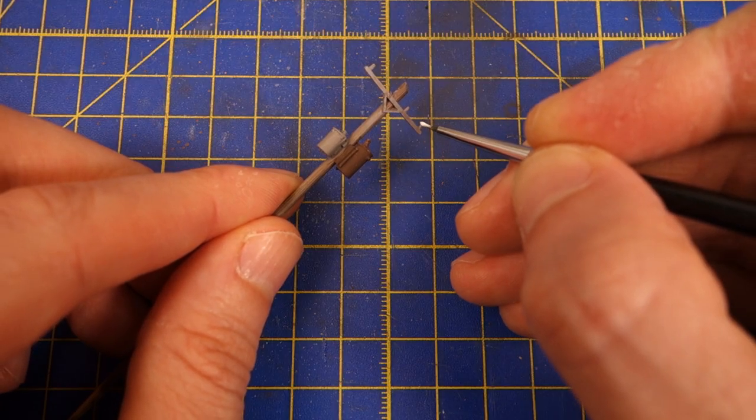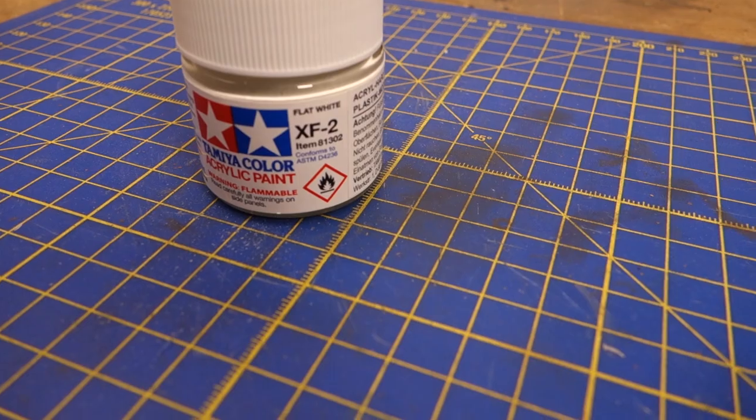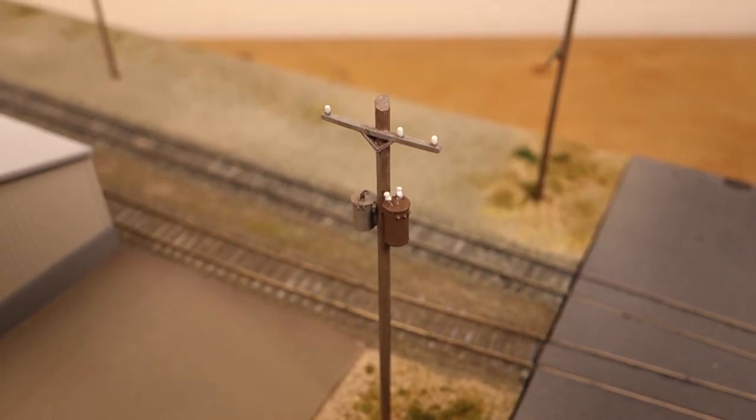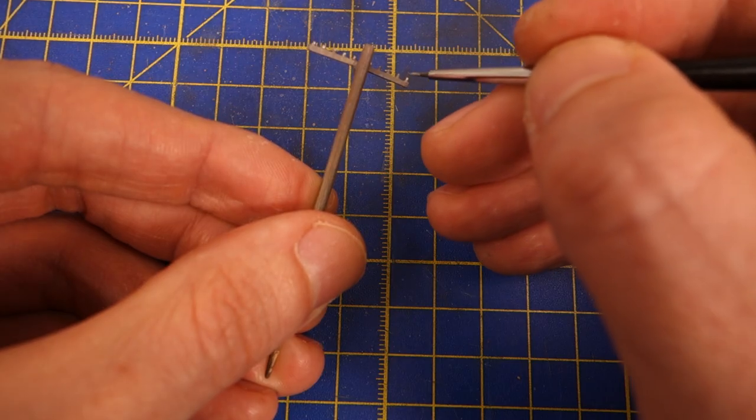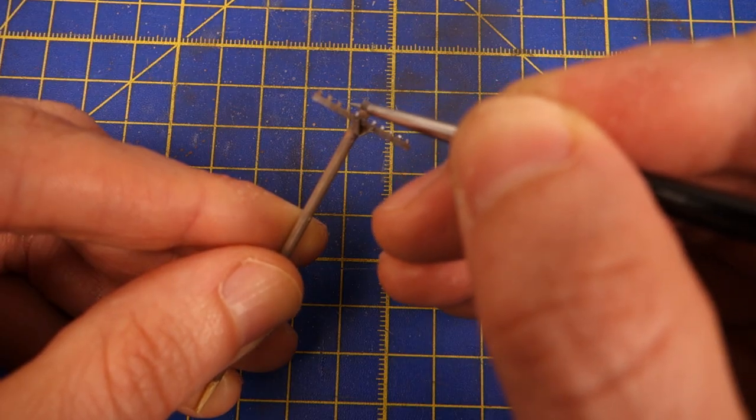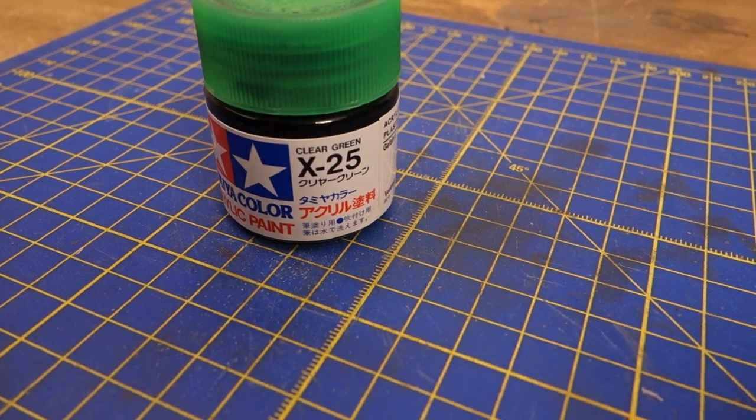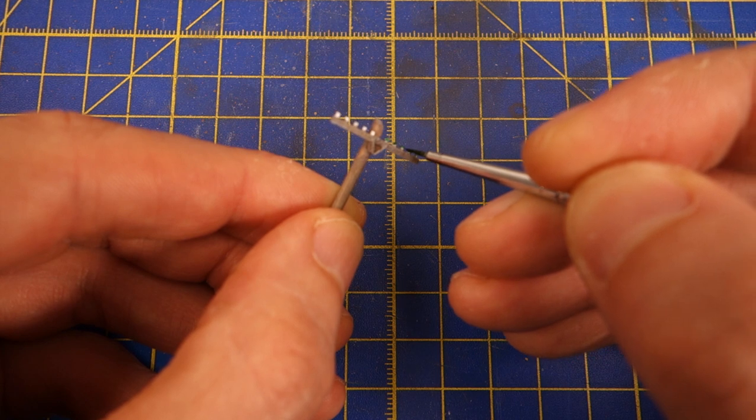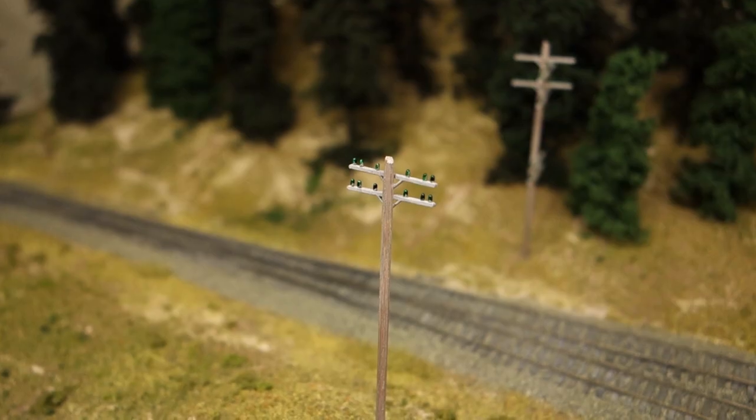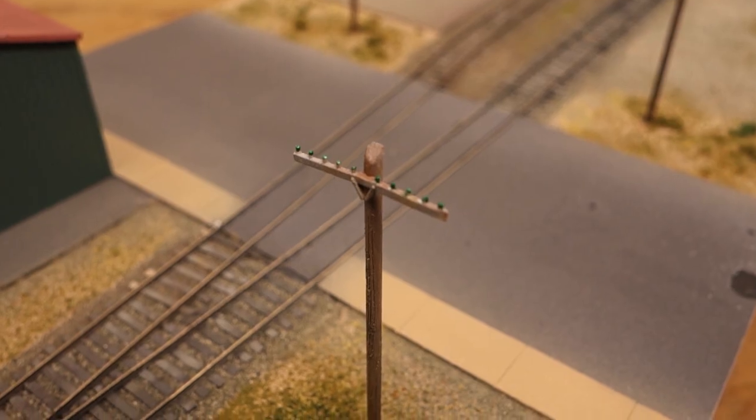Now it's time to paint the insulators on the cross arms. I paint the insulators for power lines either XF2 Flat White or Flat Brown, whichever makes them stand out more in any given setting. The insulators for telephone lines receive a base color of XF16 Flat Aluminium and a final layer of XF25 Clear Green. All that's left to do now is wait for the paint to dry and then glue the finished utility poles in place.